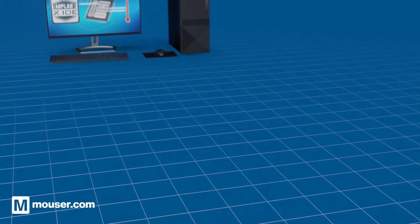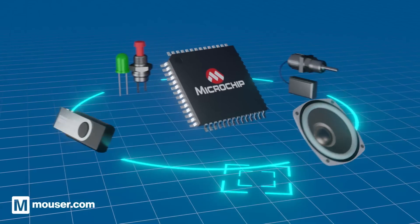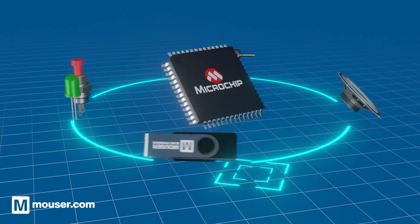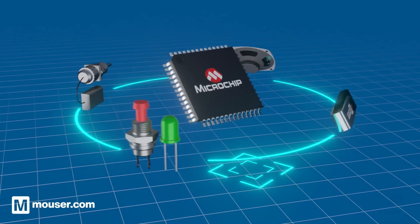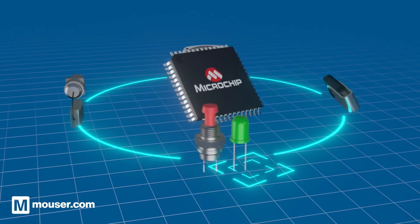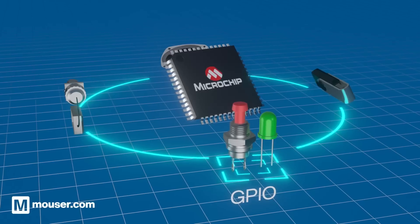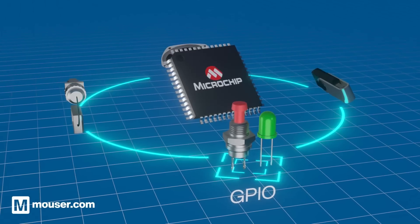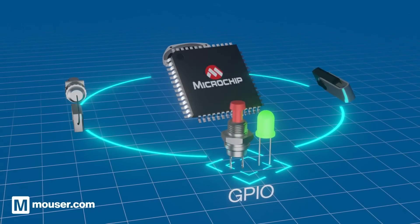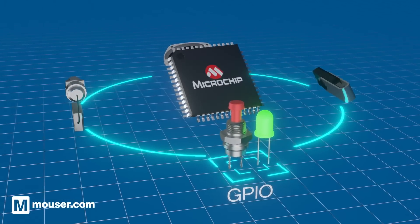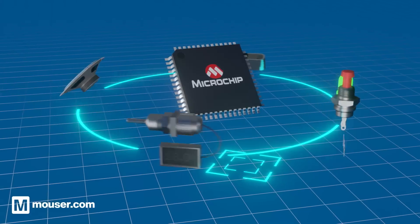Inputs and outputs are usually called peripherals. They connect the microcontroller to what is being controlled. Typical peripherals include general purpose input and output, or GPIO, to connect inputs like buttons and outputs like LEDs.